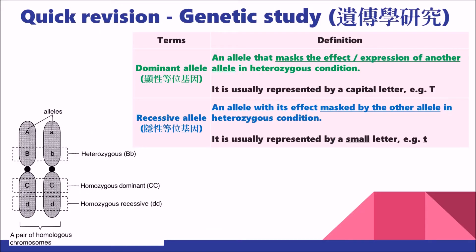Secondly, I would like to recall the basic ideas of alleles for genetic study. Since we are going to study the pedigree, we have to have some common language to communicate. There are two types of alleles: dominant and recessive alleles. Dominant allele is an allele that masks the effect or expression of another allele in heterozygous condition, and is usually represented by a capital letter. Recessive allele is an allele whose effect is masked by the other allele in heterozygous condition, and is usually represented by a small letter. When two alleles controlling a characteristic are identical, the organism is said to be homozygous. You can take a look at the diagram showing a pair of homologous chromosomes to recall the meaning of homozygous and heterozygous.